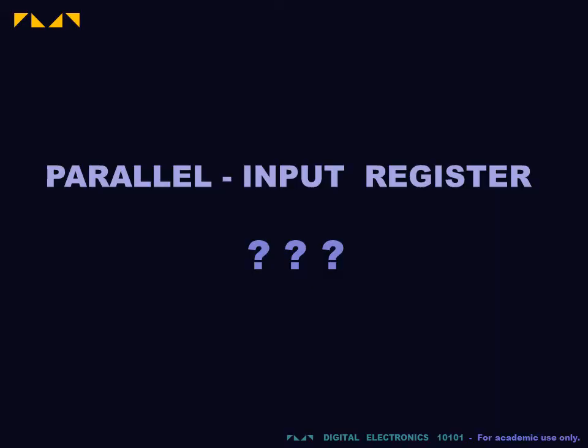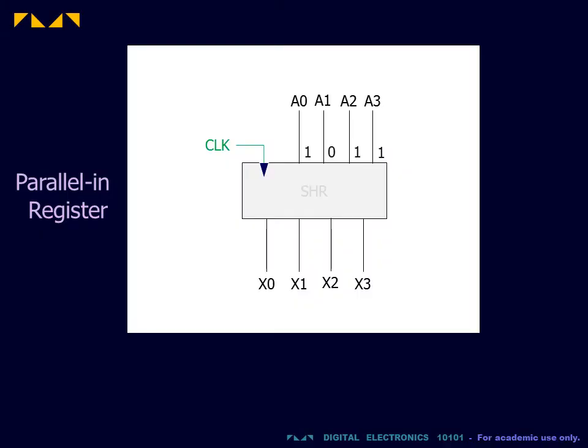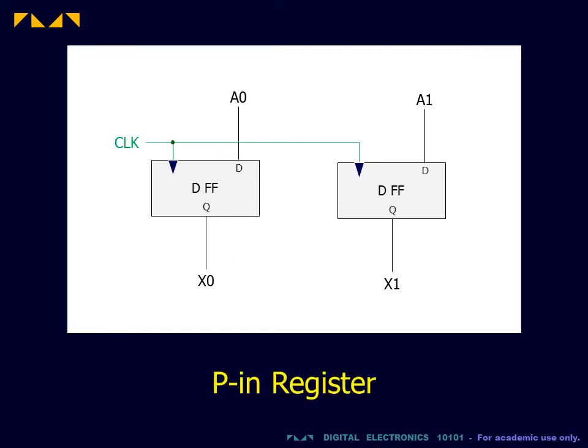We will now explore how to design parallel input registers. Parallel input data is stored in the register synchronously at the clock trigger. This process is called a load. A parallel input register can be constructed using the required number of D-type flip-flops triggered by a common clock signal.